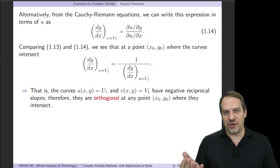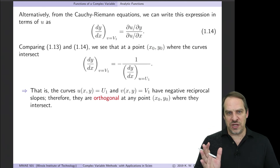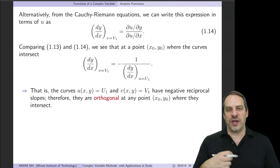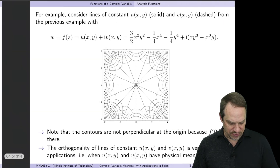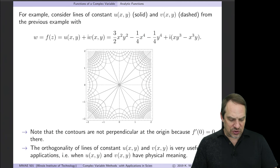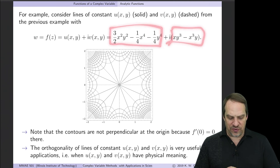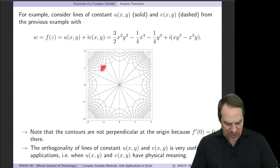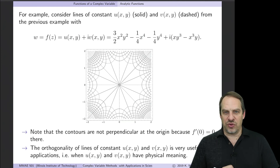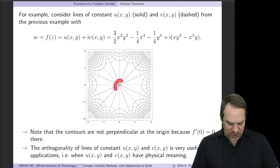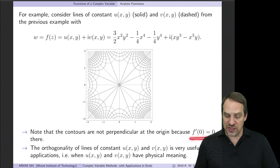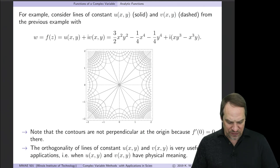So lines of constant u and lines of constant v — if u and v are the real and imaginary parts of an analytic function — are always mutually orthogonal wherever they intersect. Taking our last example: plotting lines of constant u (solid) and constant v (dashed), we see that everywhere they intersect they meet at right angles. The center point appears special because at the origin f′(z) = 0, which is called a critical point. But everywhere else in the domain, every intersection is at right angles to one another.